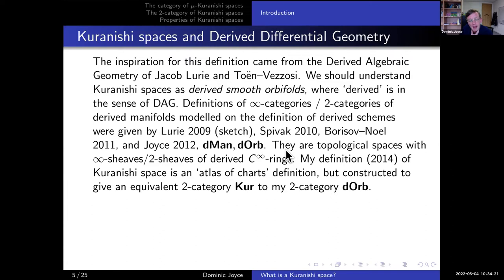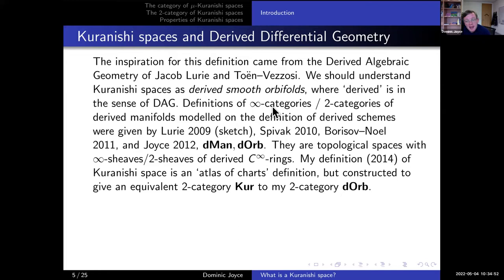In those days there was rather little crossover between people interested in derived algebraic geometry and people interested in symplectic geometry and the Fukaya theory. I was somebody interested in both. When I read David Spivak's thesis, I had a revelation: I realized that Professor Fukaya's Kuranishi spaces were really derived smooth orbifolds, and that Spivak and Professor Fukaya were trying to essentially do the same thing. I then decided it was my mission to simplify the definition of derived manifold and derived orbifold enough that symplectic geometers would be happy to use it.